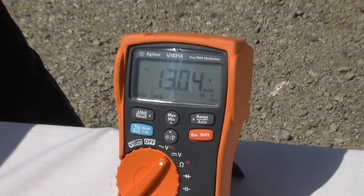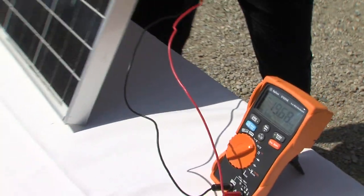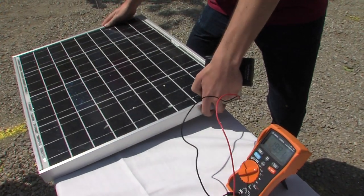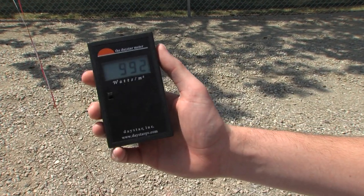Now it doesn't go to zero because we're still getting radiation that's not directly from the sun. That's actually what this little device right here measures. You can see it's pointing straight